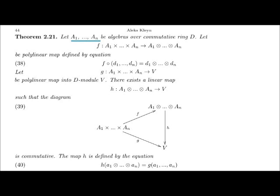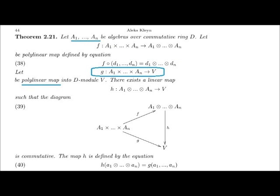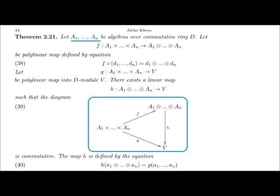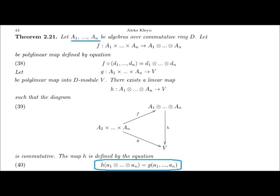Based on the definition of tensor product and the existence theorem, we can state the following theorem. Let A1, ..., AN be algebras over commutative ring D. Let map F be the polylinear map from the product of the algebras A1, ..., AN into the tensor product of the algebras A1, ..., AN, defined by equation 38. Let G be a polylinear map of the product of algebras A1, ..., AN into module V. There exists a linear map H of the tensor product of algebras A1, ..., AN into module V such that diagram 39 is commutative. The map H is defined by equation 40.